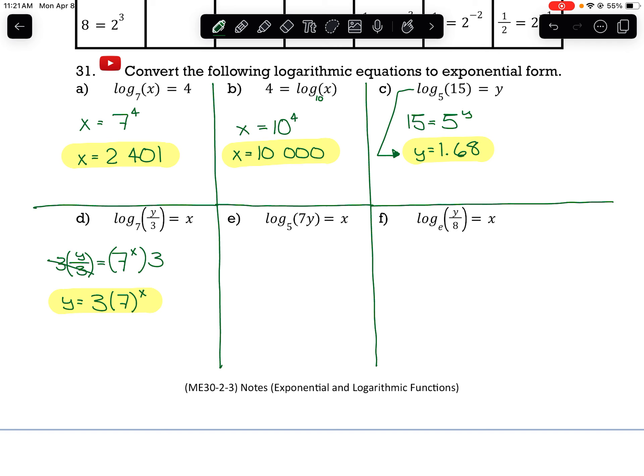Part E, log base 5 of 7y equals x. So the base is 5, the exponent's x, and that's equal to our argument, which is 7 times y.